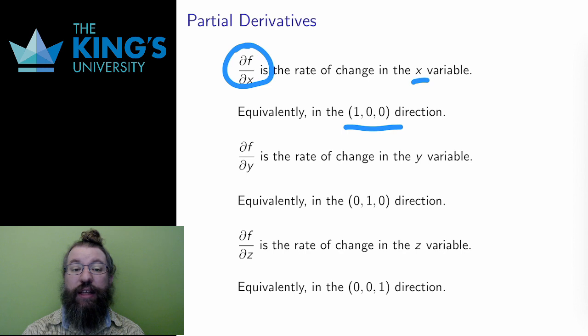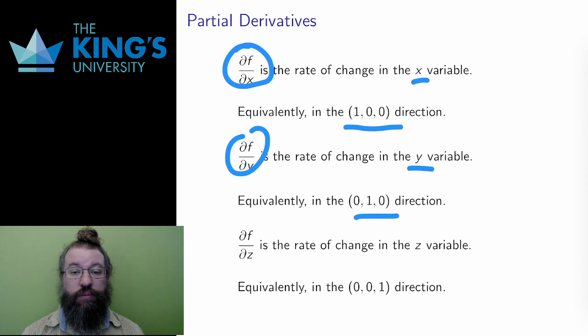And note, this is a local direction. At any point, I can look in the x direction. So the partial in y is likewise the rate of change in the direction (0, 1, 0), and the partial in z is the rate of change in the direction (0, 0, 1).